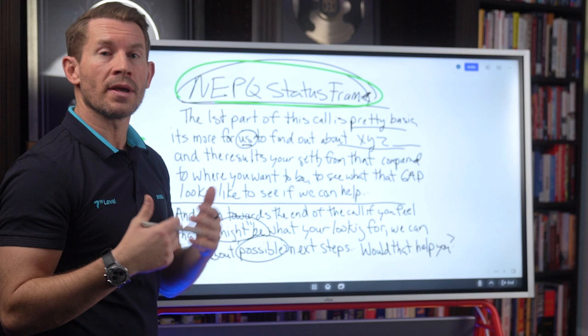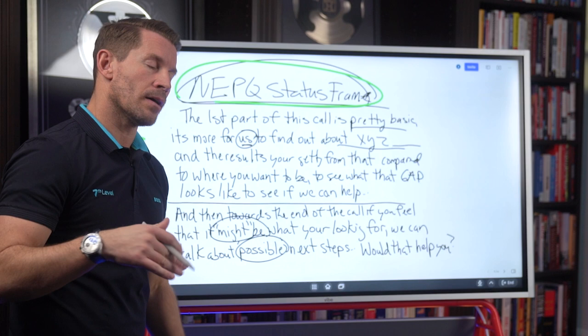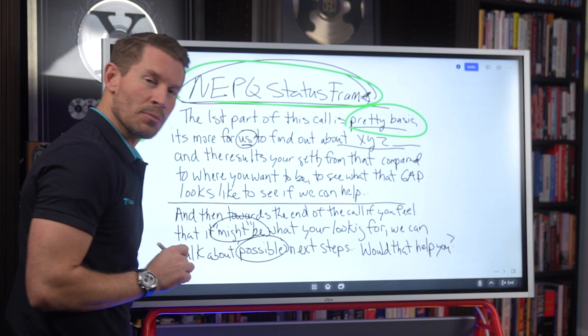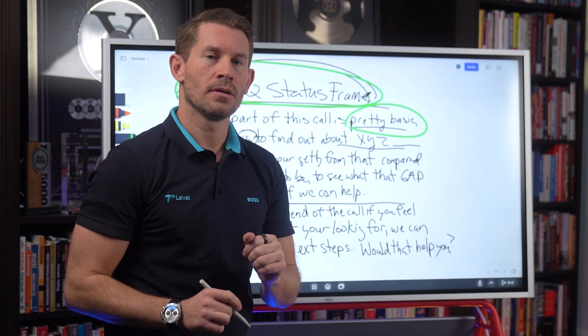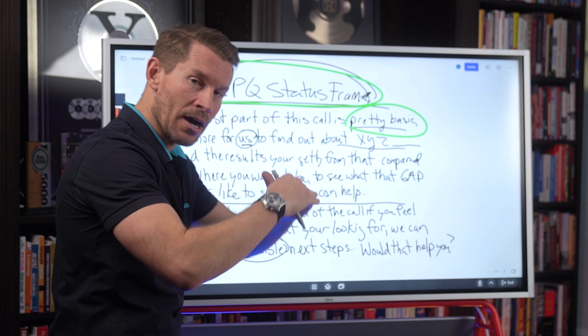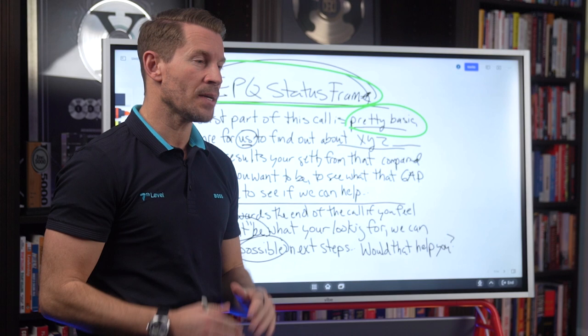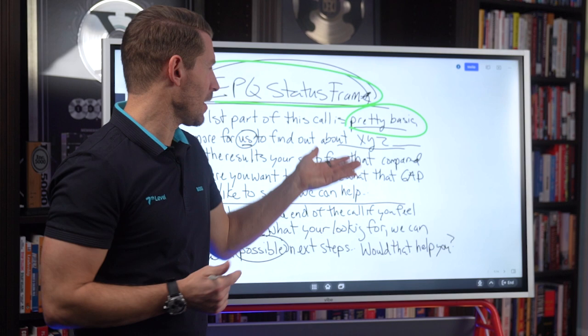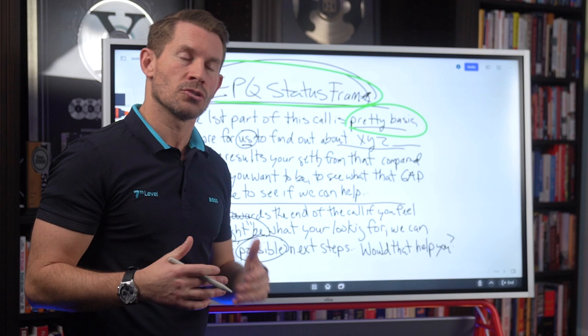Let me break this down. 'The first part of this call is pretty basic' — why would I downplay it? Because the average prospect doesn't like overly enthusiastic salespeople, just like you don't. When I downplay it, it causes the prospect to let their guard down. Just because you're excited about the product and believe in it — does the prospect believe in it a couple minutes into the conversation? No, because you have zero trust and credibility at that point.